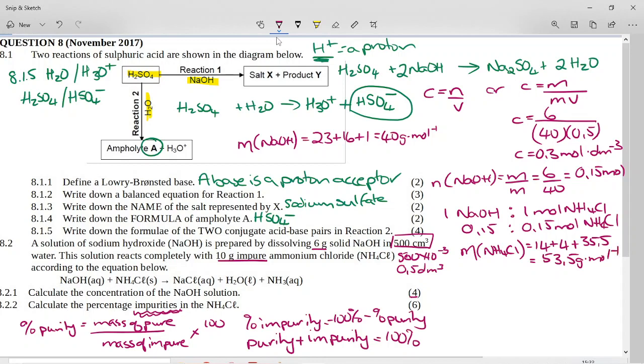So what we want to do now, is we know that my sodium hydroxide reacted with the ammonium chloride in a one-to-one ratio. So I know that there was 0.15 moles of ammonium chloride reacted, and I want to know how much that weighs.